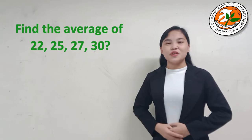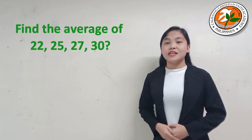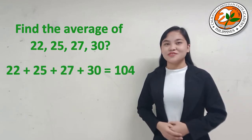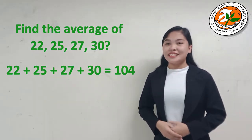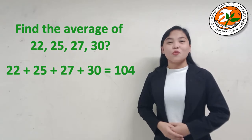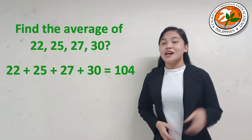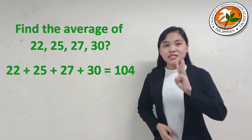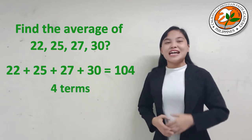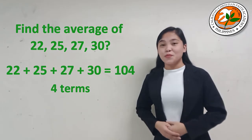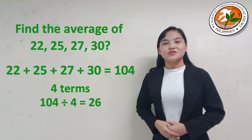Another example: find the average of 22, 25, 27, and 30. First, add all the terms: 22 plus 25 plus 27 plus 30 is equal to 104. Second, count all the terms: 22, 25, 27, and 30 — we have 4 terms. Third, divide the sum of the terms by the number of terms: 104 divided by 4 is equal to 26.